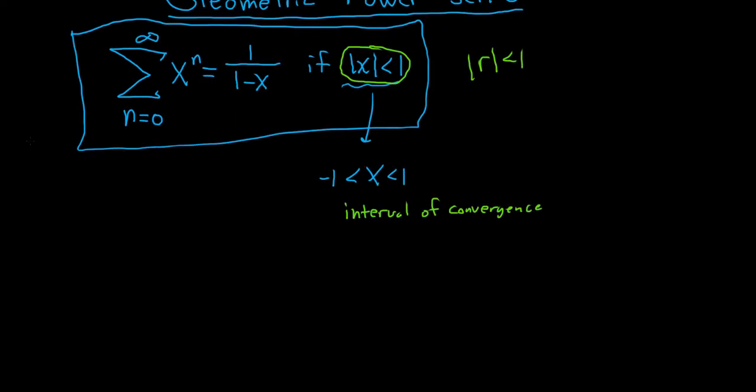All right, let's do a simple example where we find the power series and the interval of convergence. Actually, this is not a simple example. This one's a little bit harder, so this will be good. So 1 over 3 minus x. That's our function. And our center is 1. So this is going to be the center of the power series.